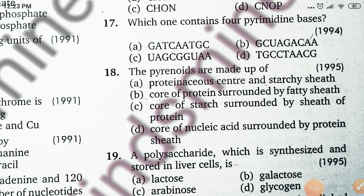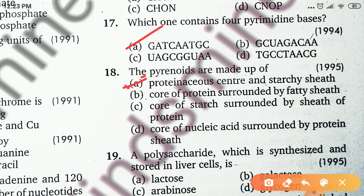The 17th question asks which one contains four pyrimidine bases — a straightforward question. The 18th question: proplastids are made up of — proteinaceous center and starchy sheath, core of protein surrounded by fatty sheath, core of starch surrounded by protein sheath, or core of nucleic acid surrounded by protein sheath. The right answer is proteinaceous center and starchy sheath, as proplastids have a dense proteinaceous area surrounded by a starchy sheath with reserve polymers.